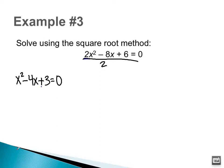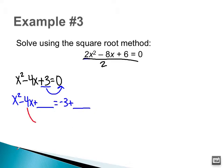First thing I want to do is move this 3 over to the other side: x² − 4x [space] = −3 [space]. To find out what to add, I take the b term — negative 4 — divide it by 2, and then square it. Negative 4 divided by 2 is negative 2, and then I square that.